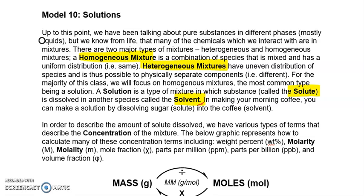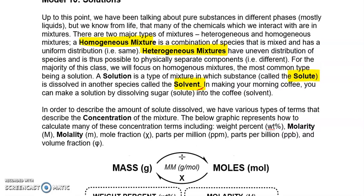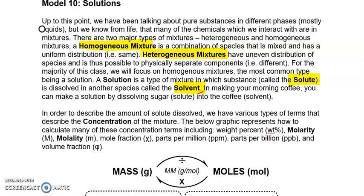One of the big terms we really care about is concentration — which is just saying how much of that solute was added into the solvent. The two first things to start with are converting between mass and moles, which are two of the most common terms appearing in our concentration expressions. We can convert between mass and moles using the molecular weight, or molar mass, which has units of grams per mole.